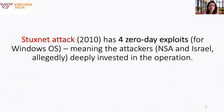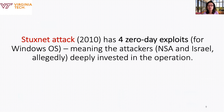Stuxnet — the attack launched against Iranian nuclear research facilities in 2010 — had four zero-day exploits. Zero-day means this is the first time the attack appeared publicly. This is significant because for a known attack there would be a patch or antivirus signature, but for a zero-day nobody knew about it ahead of time, making it very devastating. This particular attack had four brand-new, previously unknown exploits.